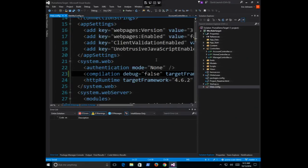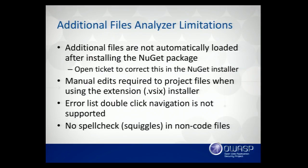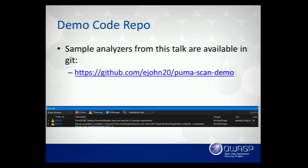Those are two different analyzers you can use to build security rules within your apps. Recap of limitations: additional files are not automatically loaded — you need to edit your csproj files to add that content option. I'll eventually get the NuGet package to do that automatically. You have to manually edit project files if using the VSIX extension install option. Double-click navigation is not supported, and you don't get squiggles inside your config and non-code files yet — that's part of that GitHub issue. All the code I mentioned, plus those two examples and the target, are in a Git repo for you to download and tinker with.